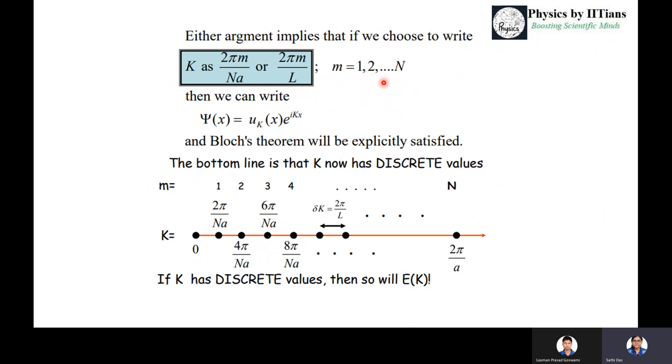So whenever k has discrete values, we know that energy and k are related, so if k is discrete it means the energy value will also be discrete.